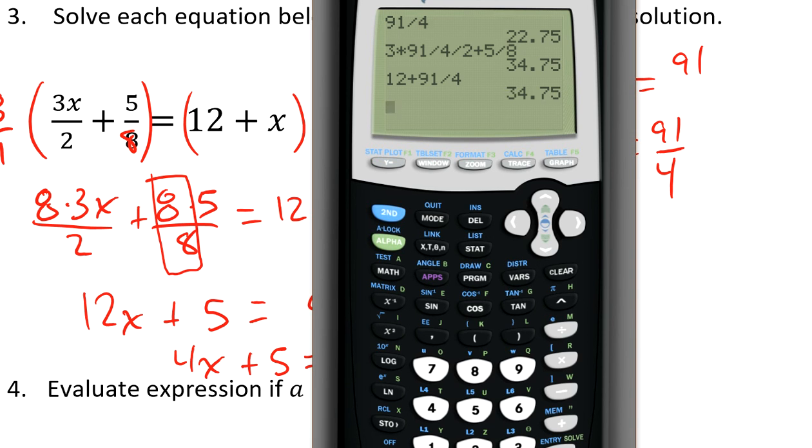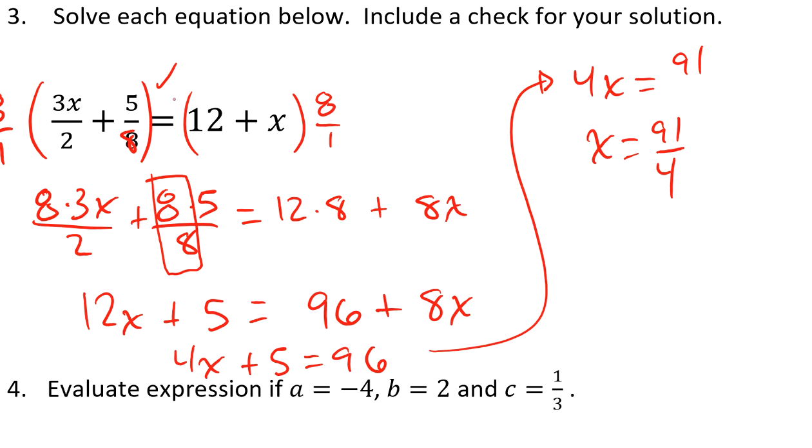So because 91 fourths made both the left and right hand side truly equal to each other, this and this are equal. It's a verified solution. So x is 91 fourths.